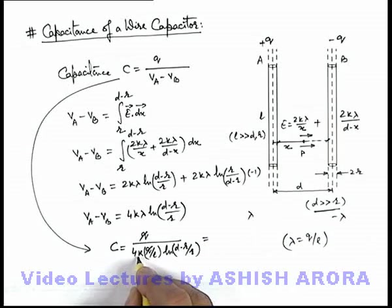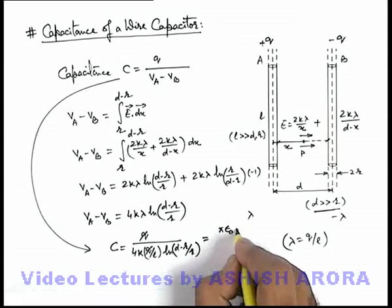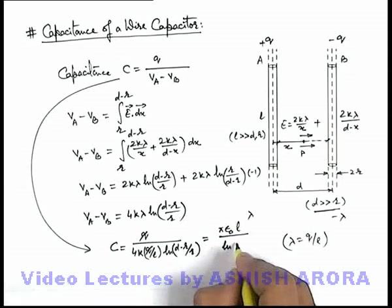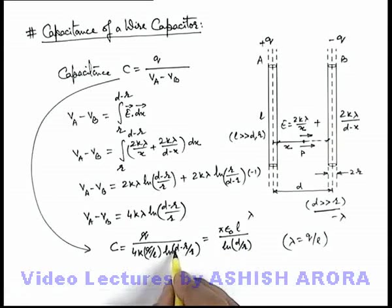This can be written as, k can also be written as 1 by 4 pi epsilon not, then it'll be pi epsilon not l upon ln of d by r. Or more precisely we can also write d minus r by r, just have taken an approximation.